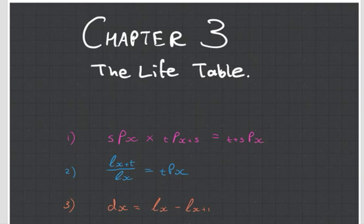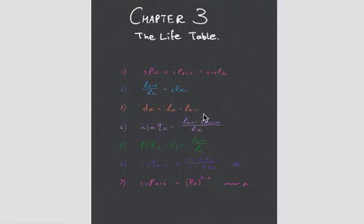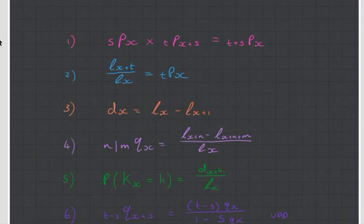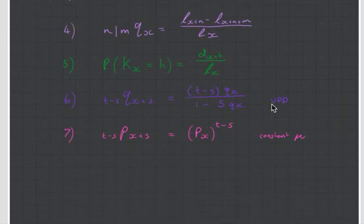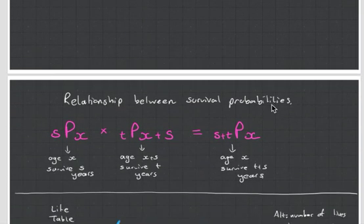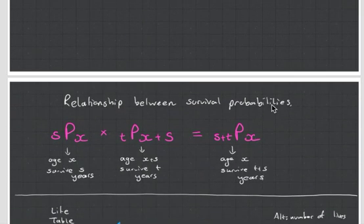If we just zoom out quickly, we can see that these are the seven formulas that we need to know and understand from this chapter. But don't worry, we're going to go through each one step by step so that you understand it really nicely. The first one is this little guy here, and it's looking at the relationship between survival probabilities.